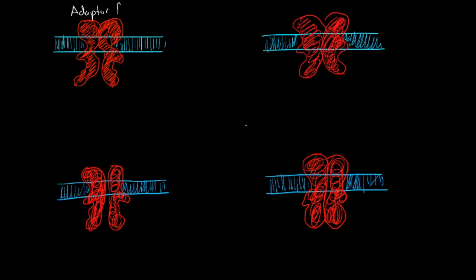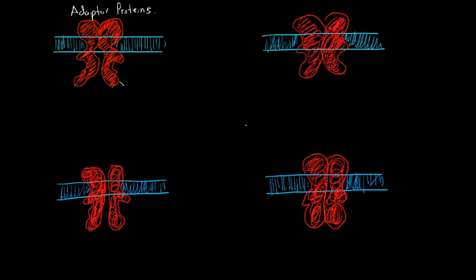Adapter proteins: here we have a phosphate that might interact with a molecule that has some sort of SH2 domain. This one is called GRB2. This will associate with and bind to the RTK, and then it will bind to something else to hold everything in place. One of the ones it commonly binds to is something called SOS.